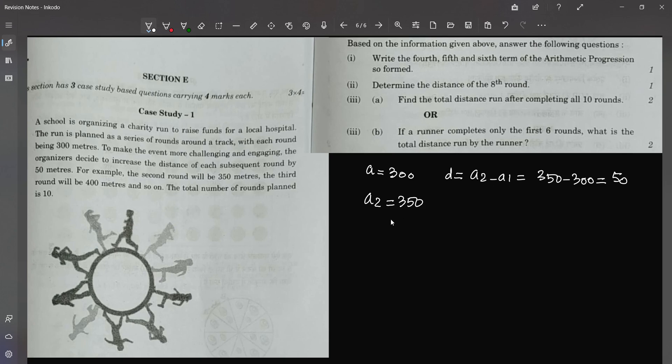So d is 50. We need to find out the 4th term. So a4 is a plus 3d which is equal to a is 300 plus 3 times d which is 150, and the answer will be 450. For a5, the answer will be a plus 4d which is just 50 extra.